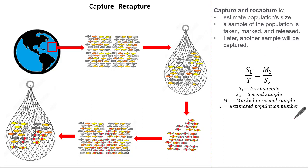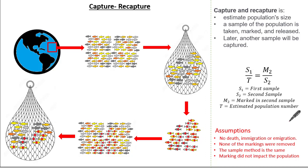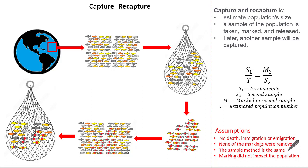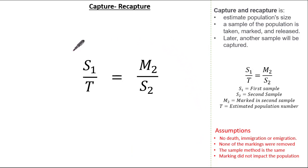It's important to remember these assumptions when looking at Capture and Recapture according to the context of the question. Firstly, you must assume there are no deaths, immigration, or emigration. We also need to assume that all markings remain and none were removed. We must assume the sampling method was identical, and lastly, that the markings did not impact the population.